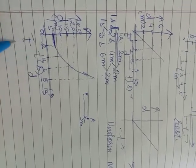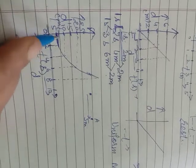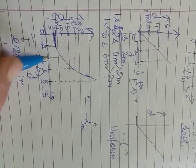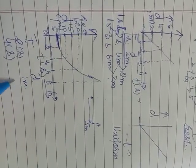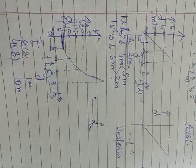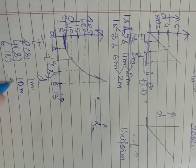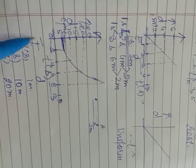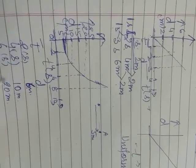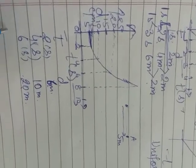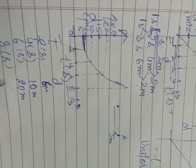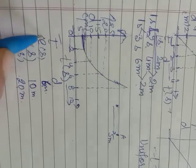Let me set up a table with time and distance. In the first two seconds the distance traveled is from 5 to 6 meters — only 1 meter. At 4 seconds the position is at 10 meters. At 6 seconds the position is at 20 meters. At 8 seconds the position is above 35 meters. So our readings are: 2 seconds → 6 meters, 4 seconds → 10 meters, 6 seconds → 20 meters, 8 seconds → approximately 35 meters.